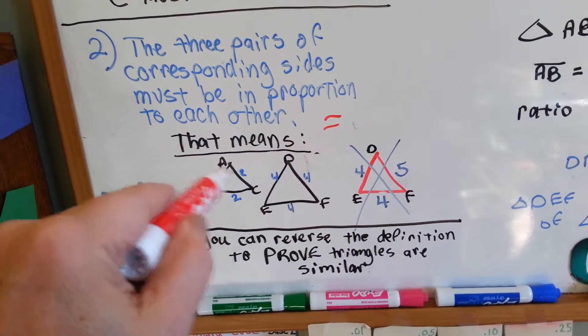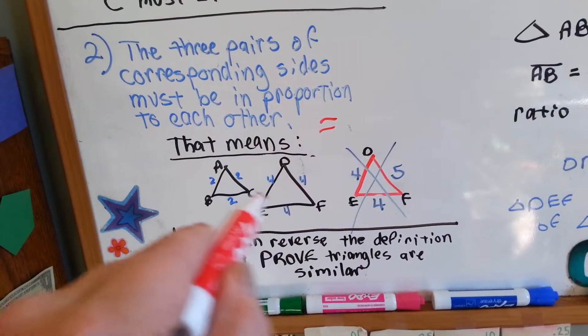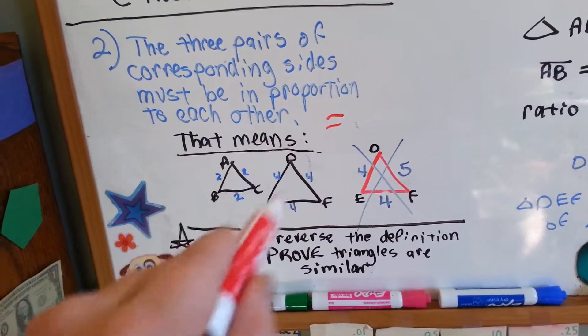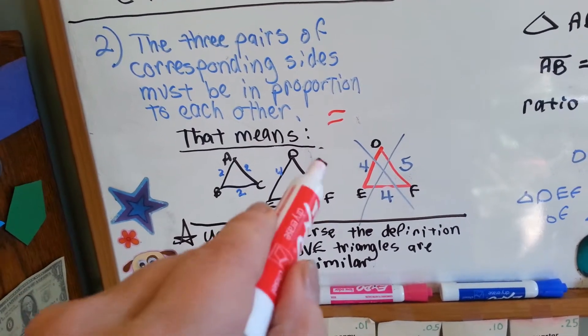They're sides all equal two. It's an equilateral triangle. And then DEF has sides that are all four. Yeah, these two are similar, because I'm sure the angles are all the same, because this one is just double the size of that one perfectly.